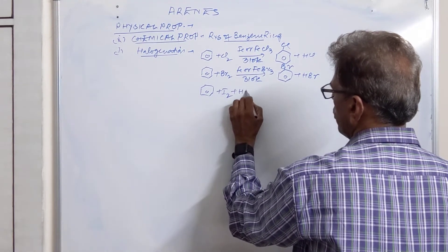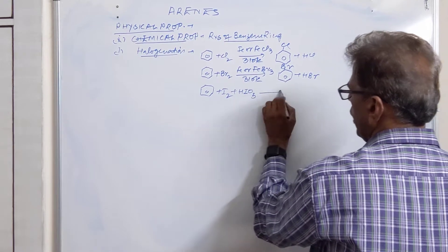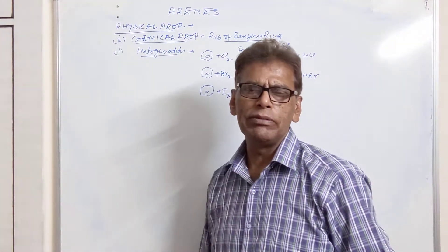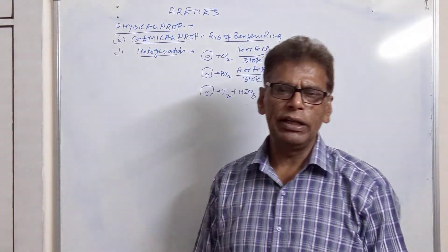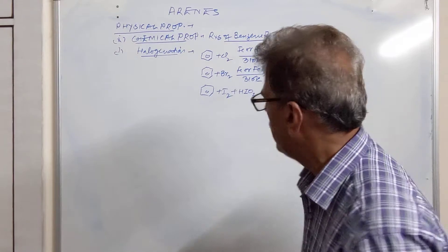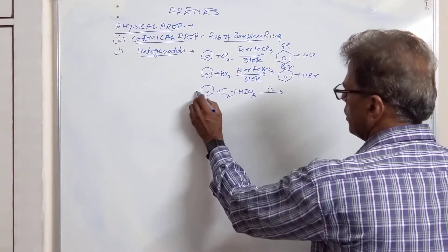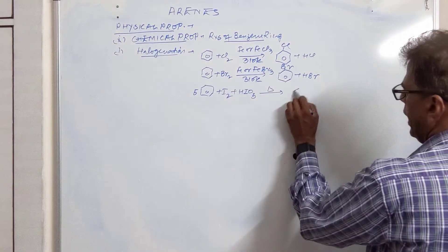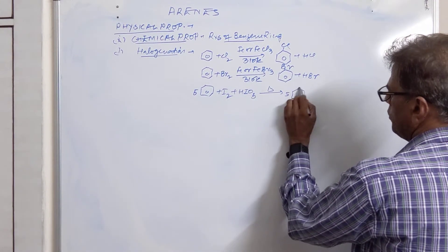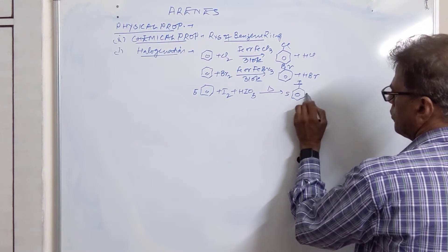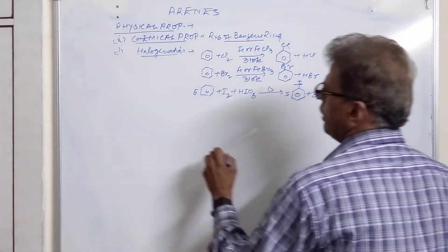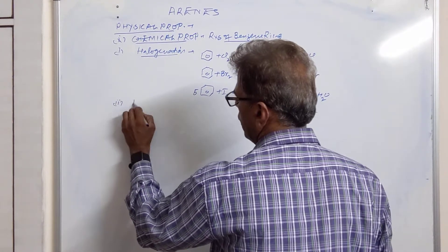Iodination should be carried out in the presence of mild oxidizing agent because this reaction is reversible. HI produced during the reaction attacks the iodobenzene and reaction gets reverted. To prevent the reversibility of the reaction, we heat it with iodic acid.